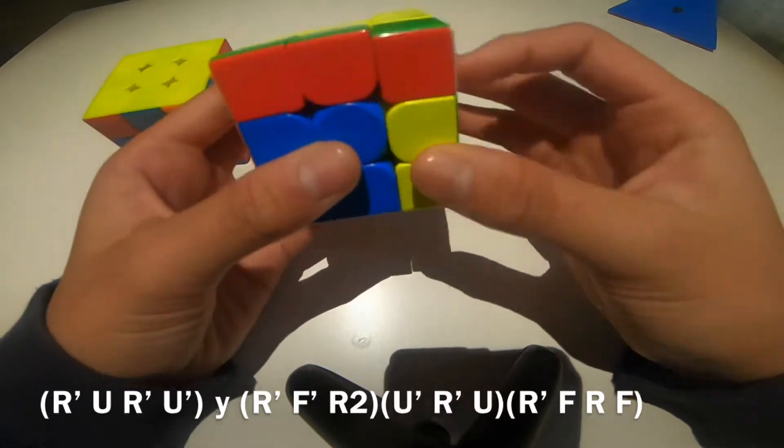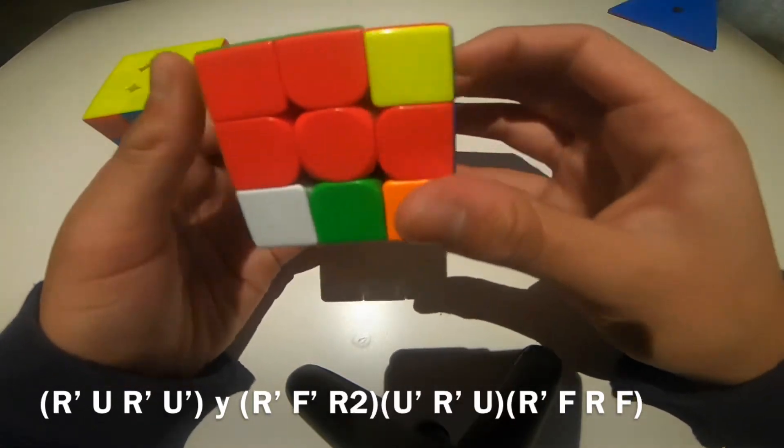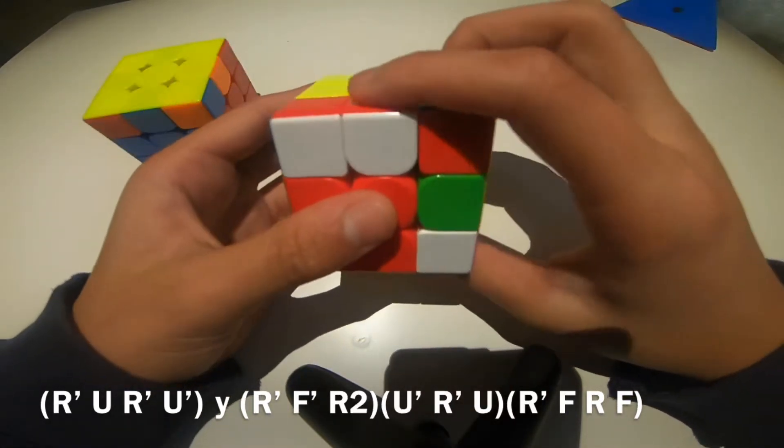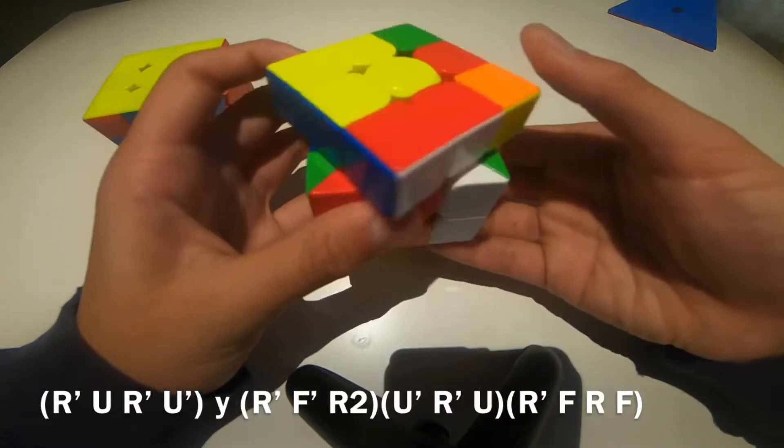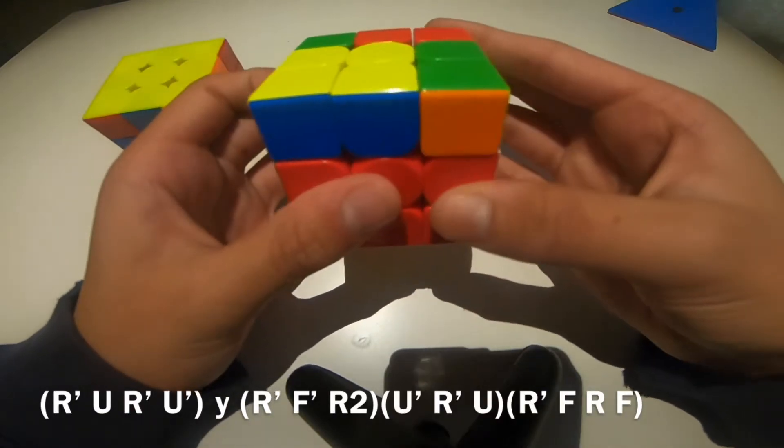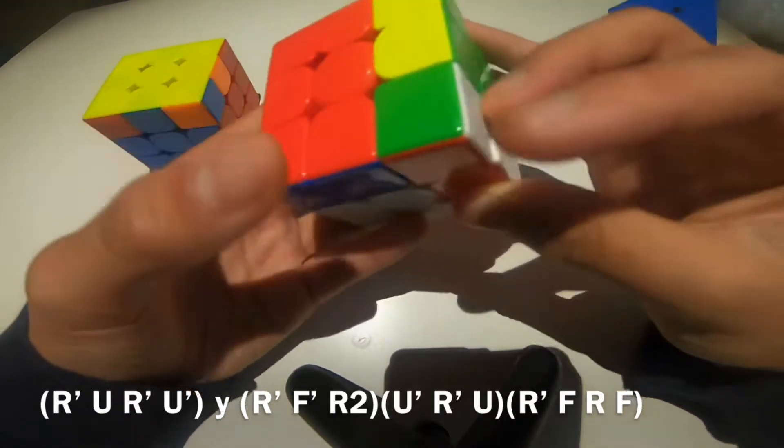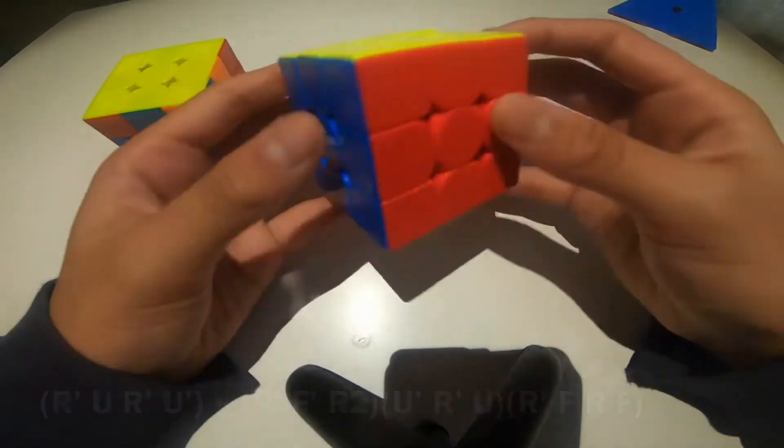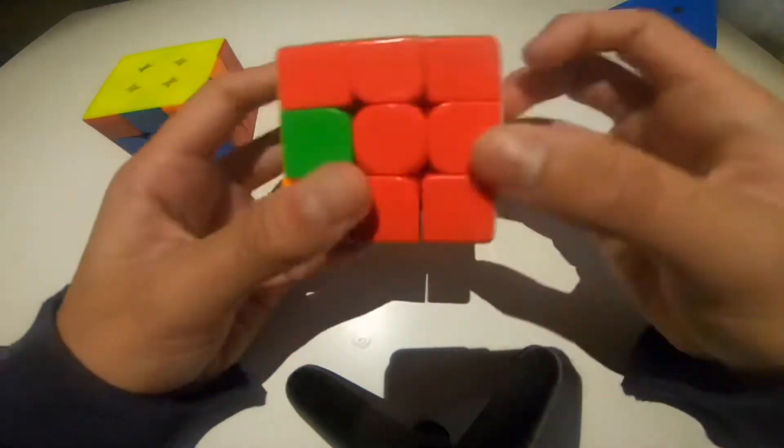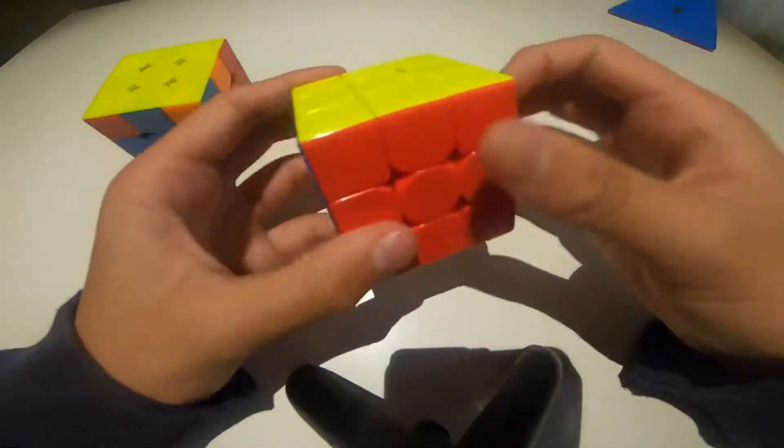rotate, or you could do D Y' like this. R' F', R2 U', R' U, R' F, R F. Not that good. There you go, that was a good one.